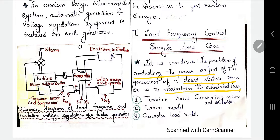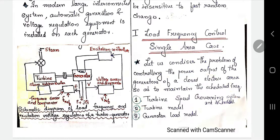We are considering a single control area, where the power output of the generators is being controlled so as to maintain the scheduled frequency. This will be understood only by analyzing a complete steady state model. The steady state analysis can be done only after getting the models of three different parts: the turbine speed governing system, the turbine model, and the generator load model. By combining these three models, we can perform a steady state analysis to study load frequency control.